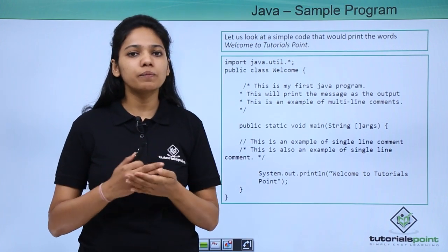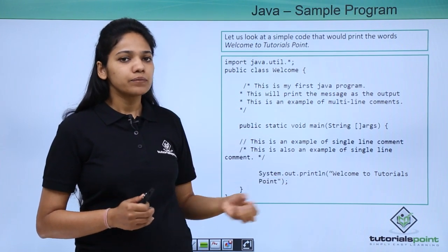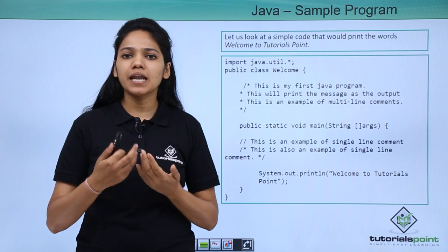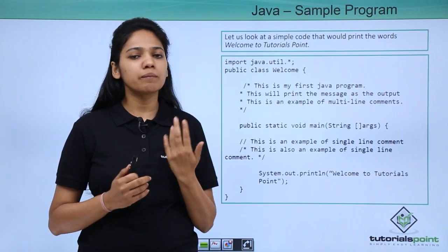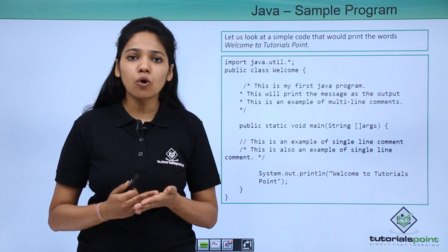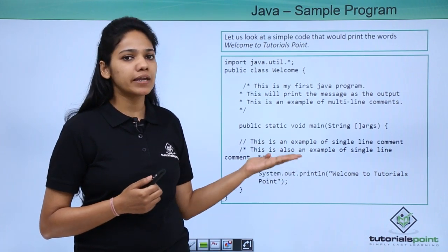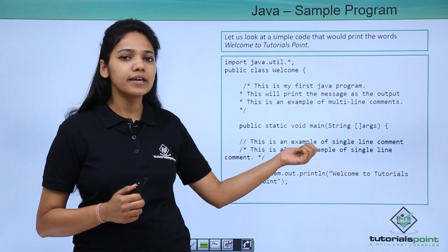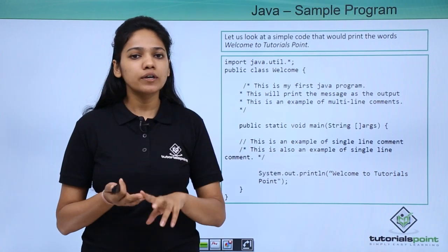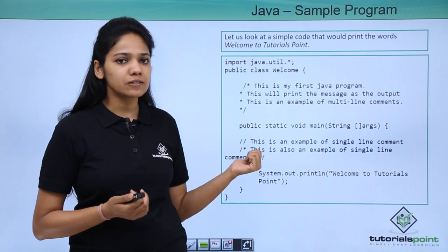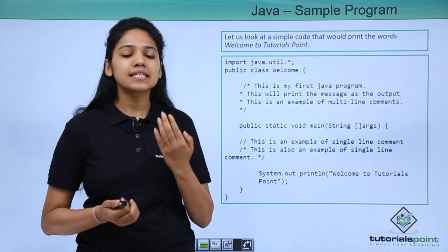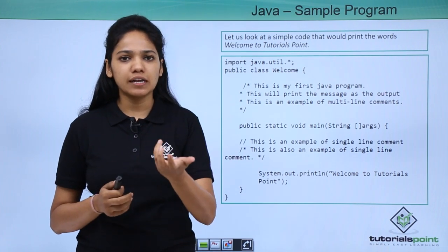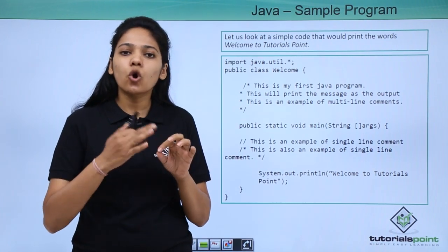Any statement that you want executed needs to be written under the class. The next important point is a method. Like a human has certain behaviors — sleeping, running, etc. — to execute all these behaviors, Java says there should be a main method from where Java program execution starts. So we have a method called public static void main(String[] args). Public is an access specifier. Static means that in the main method, you do not have to create an instance or object of the class.